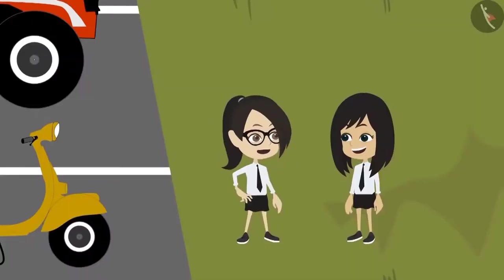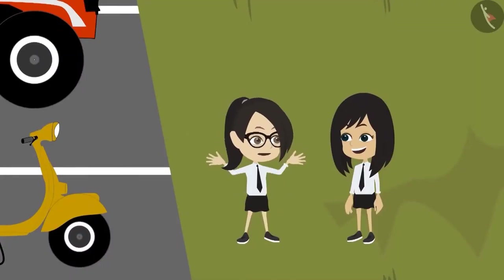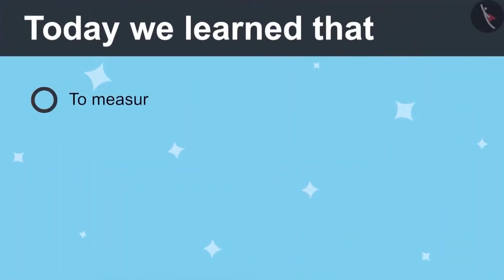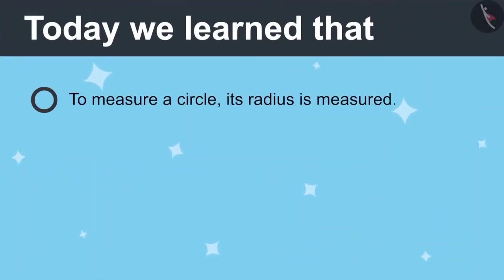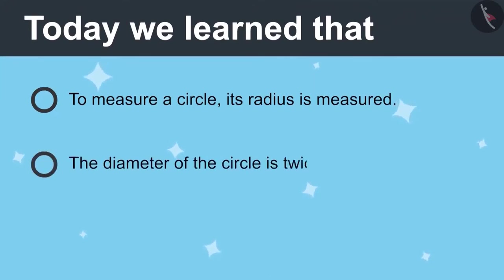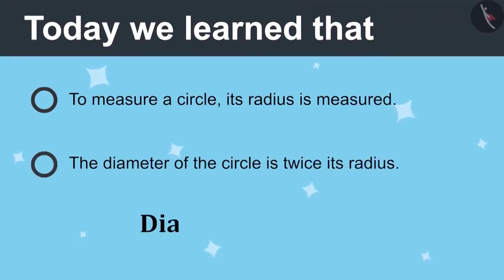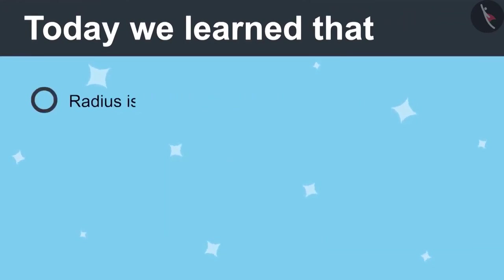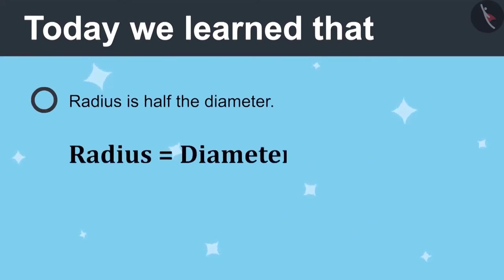We took the measurement of all the wheels. Today we learned: to measure a circle, its radius is measured. The diameter of the circle is twice its radius — diameter equals radius multiplied by 2. Radius is half the diameter — radius equals diameter divided by 2.